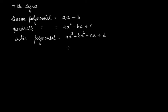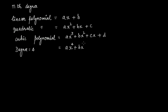Now, if you have to talk about a polynomial whose degree is 4 — that is biquadratic polynomial, degree 4 — then a polynomial in one variable whose degree is 4 can be expressed as ax raised to the power of 4 plus bx raised to the power of 3 plus cx raised to the power of 2 plus dx raised to the power of 1 plus e.